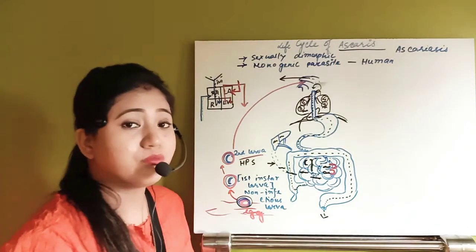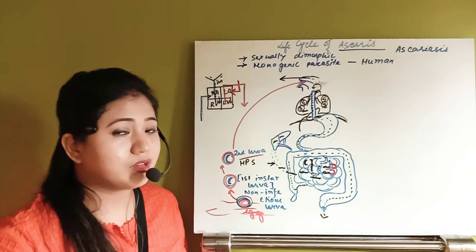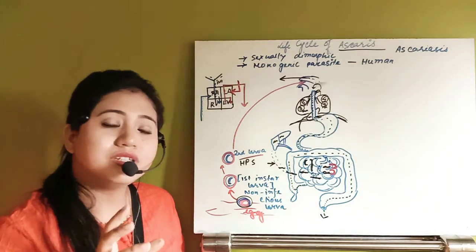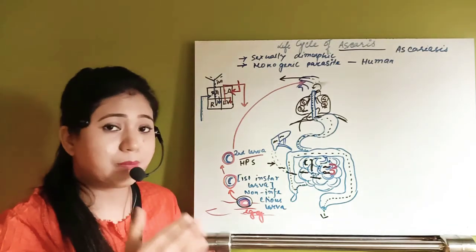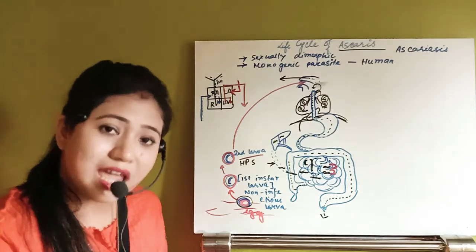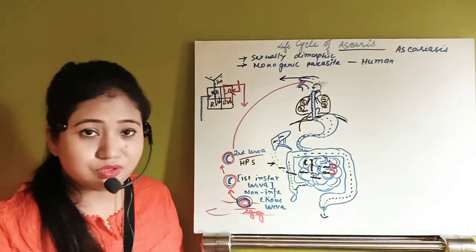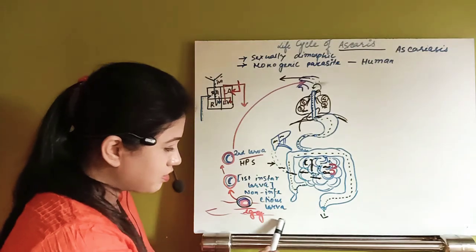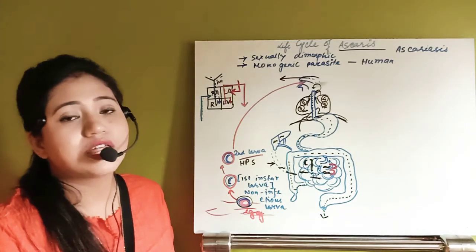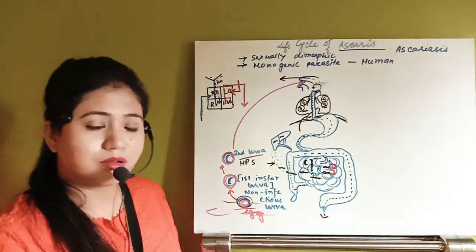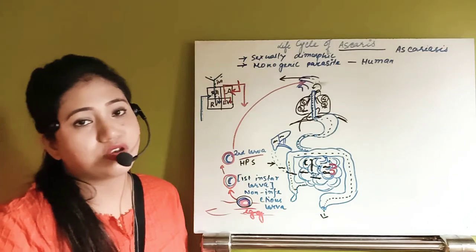When fecal matter containing eggs comes into contact with water, and that contaminated water is taken by people for household use, the egg develops into the first instar larva, then the second instar larva, which enters the mouth and completes the life cycle once again.